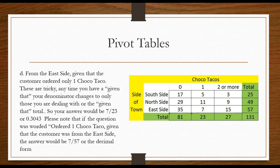From the east side given that the customer only ordered one taco. They are telling you only consider the ones that ordered one, so we're only dealing with 23 people. So from the east side given they only ordered one, that's 7 out of 23.